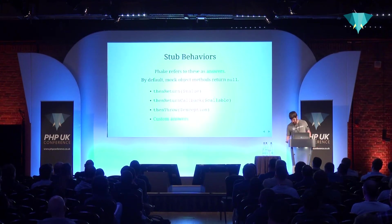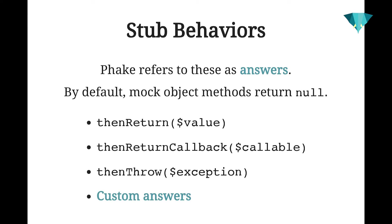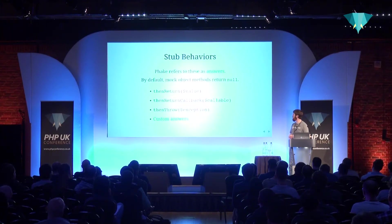There are several different behaviors you can use when stubbing methods. Fake refers to these as answers. By default, all mock object methods will return null. Other things you can do: you can have it return a specific value, invoke a callback — this callback receives any arguments the mock object's method receives and returns whatever the callback returns, effectively injecting specific logic into the stub. It can also throw an exception for testing error cases. Fake also allows you to program your own custom answers if you want to go even further.